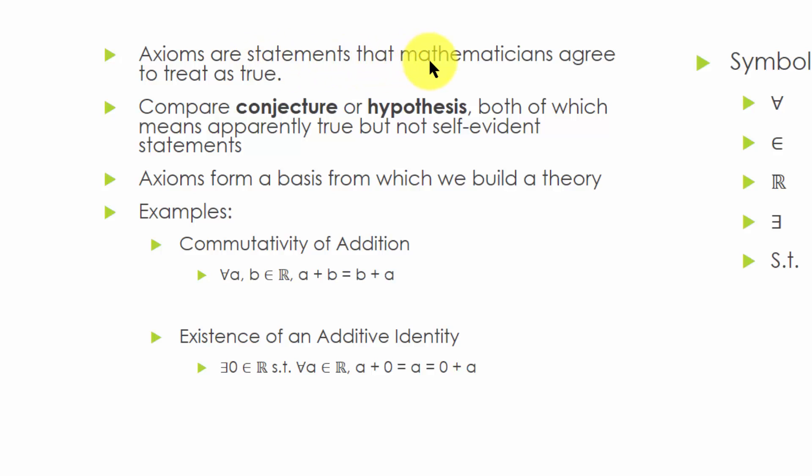They are statements that all mathematicians have agreed to treat as true. The word axiom is a slightly old synonym for postulate. Compare conjecture or hypothesis, both of which means apparently true but not self-evident statements.